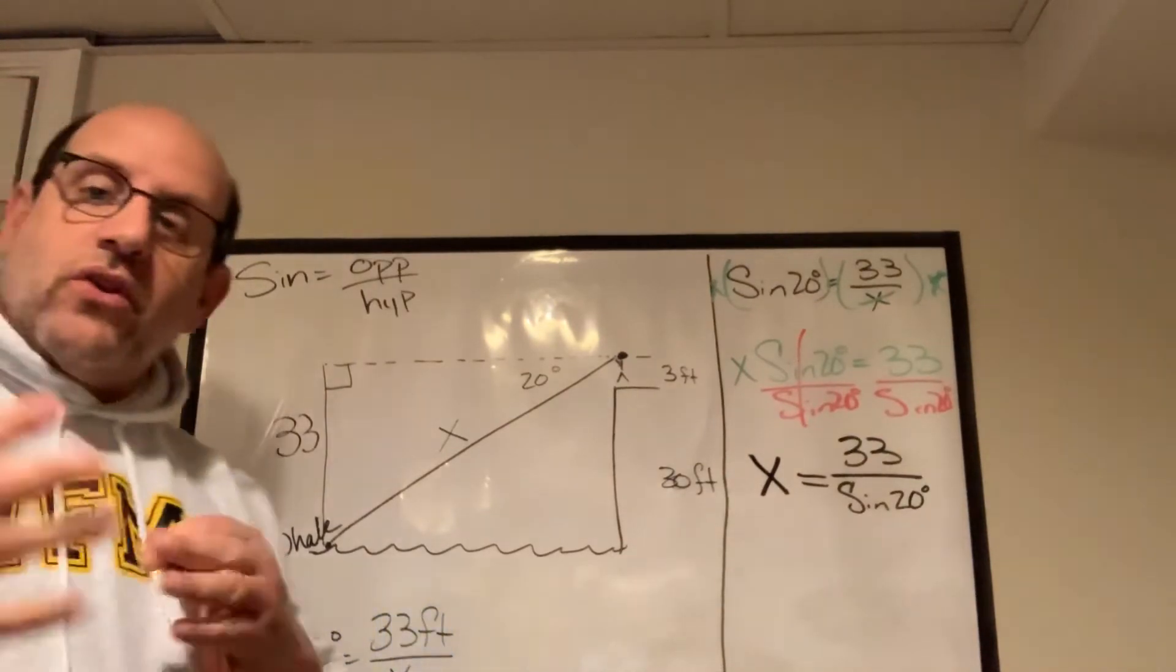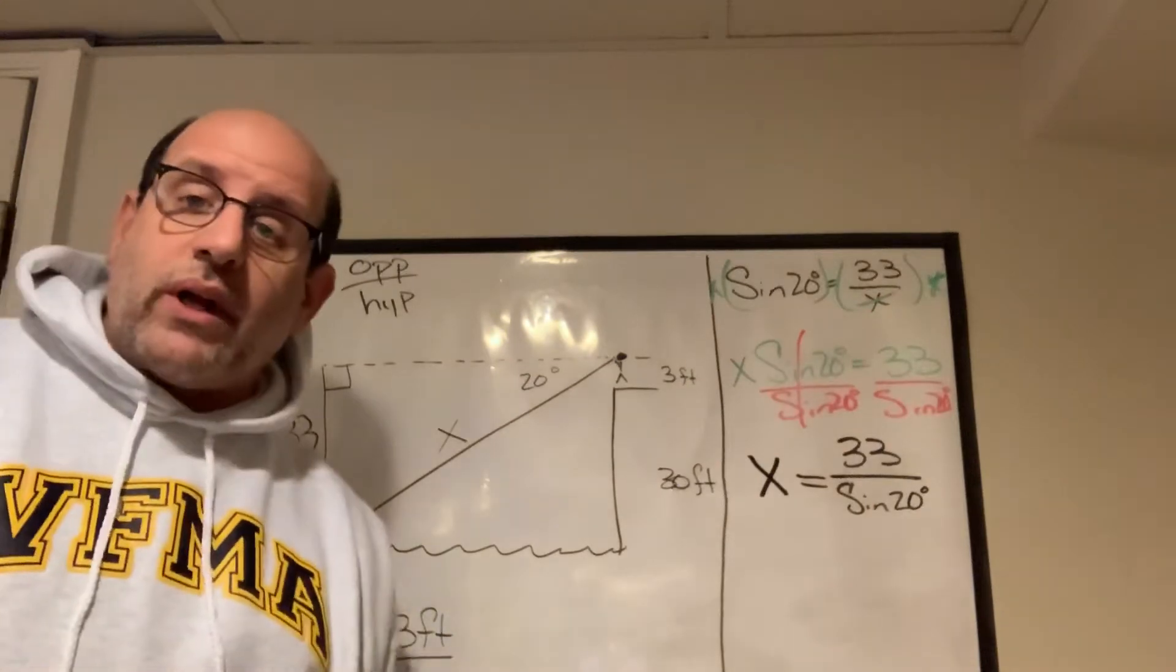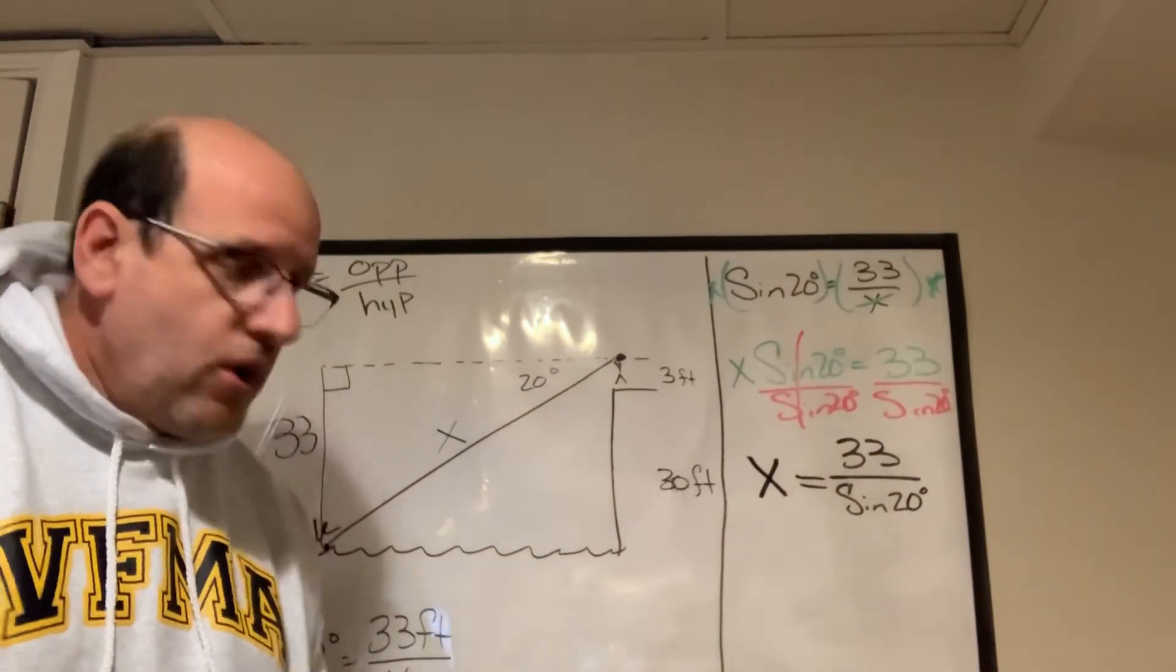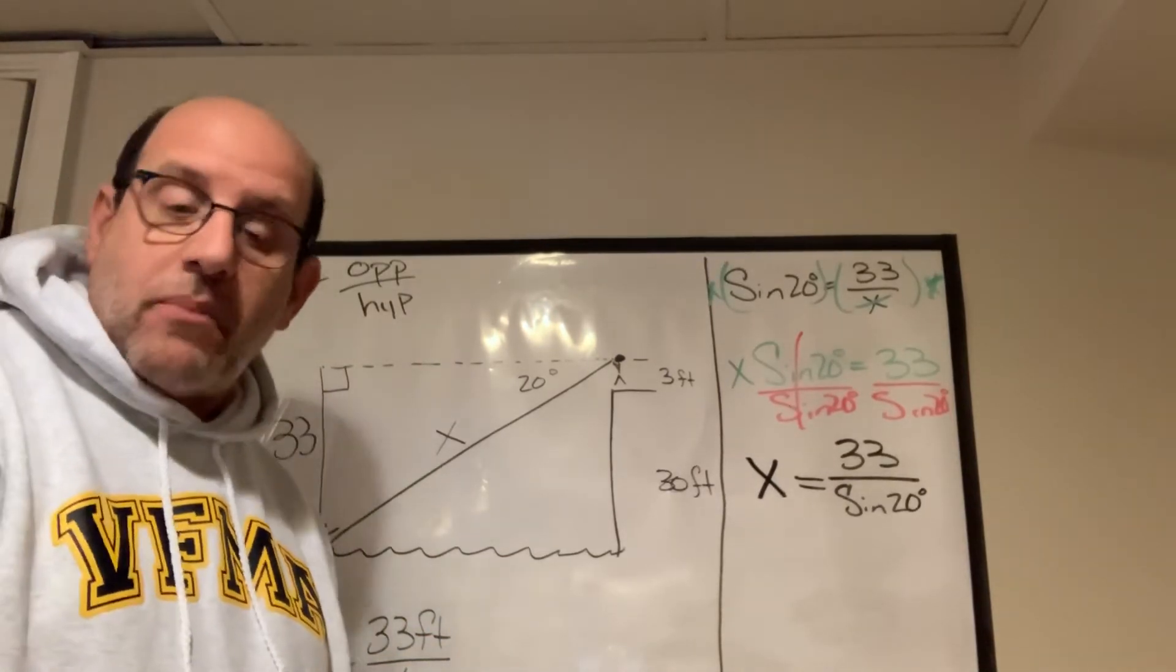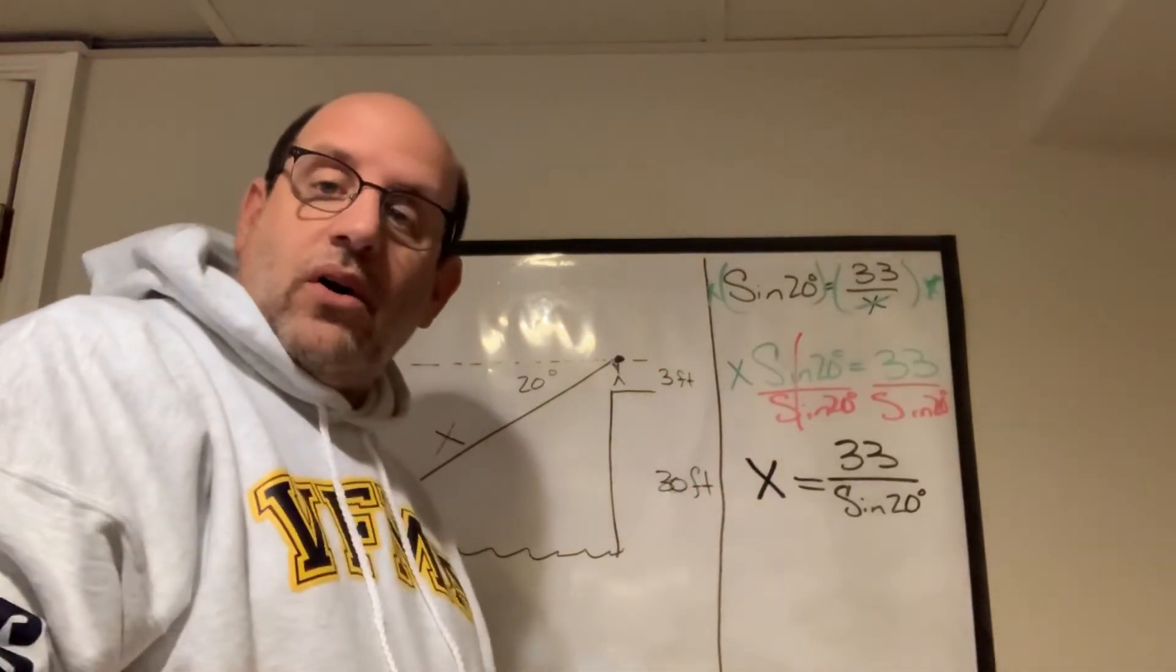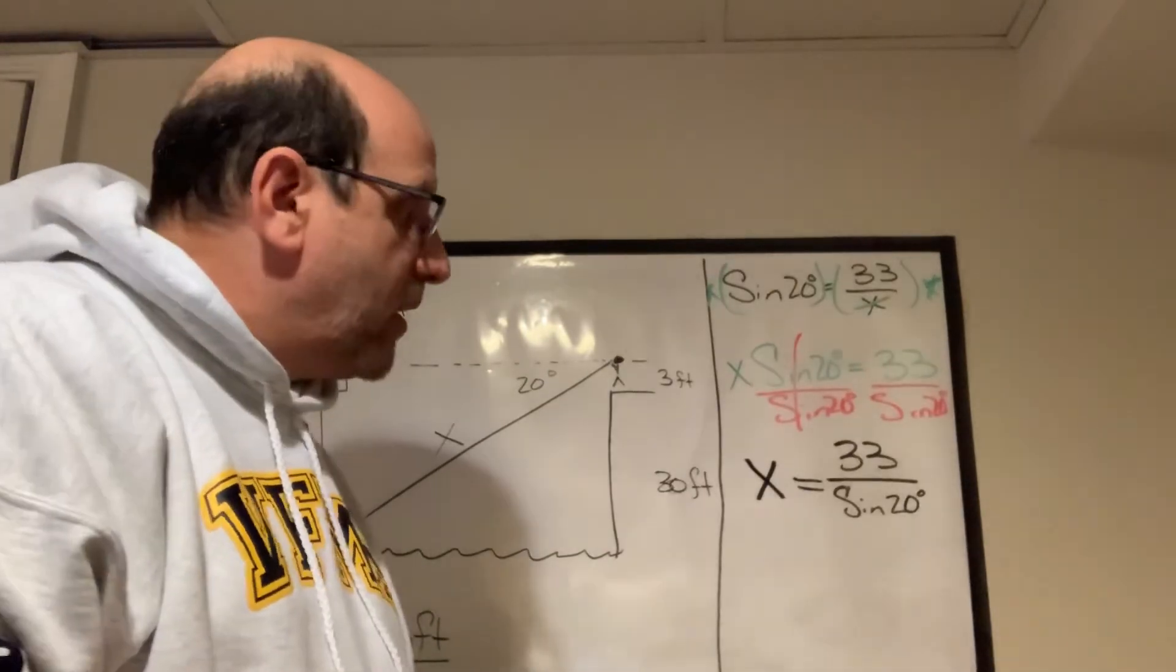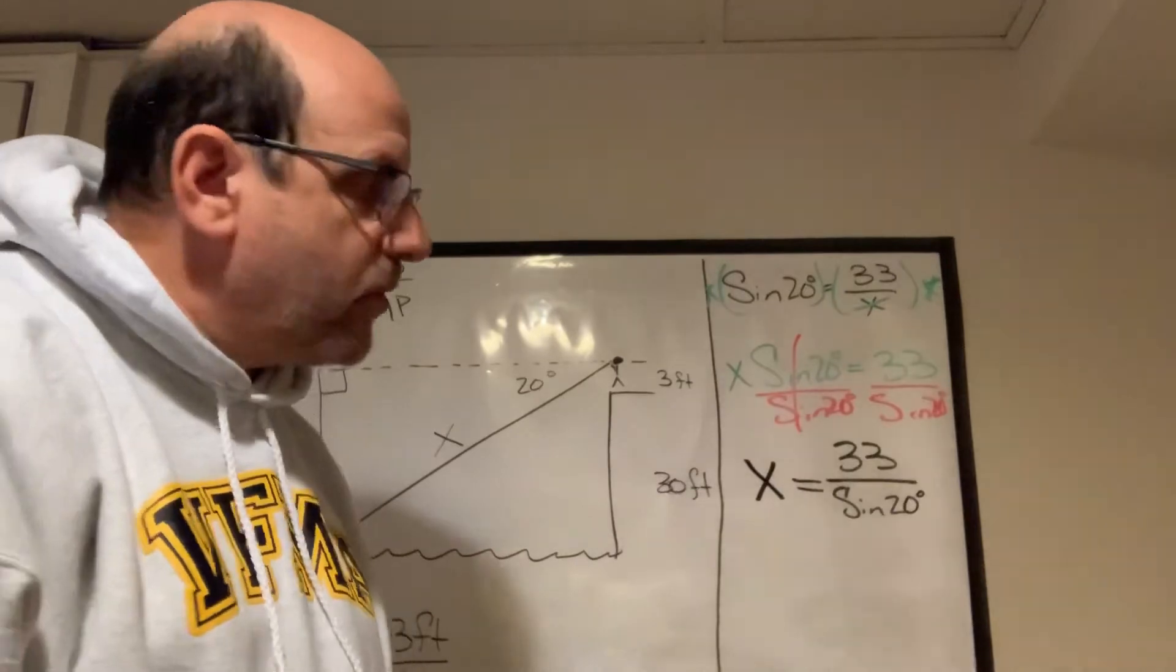Now, unfortunately, when you're doing this work and you see that 33 divided by the sine of 20, you're actually going to have to find the sine of 20 first. Write it down in the corner. I didn't do that because I didn't get out ahead of it. Maybe I'll post the sine of 20 onto the homework for tomorrow.